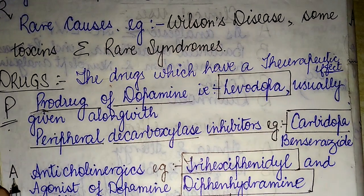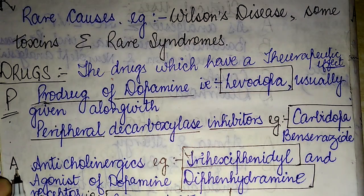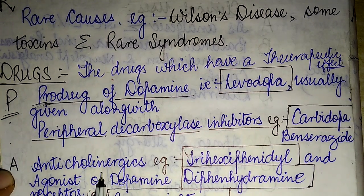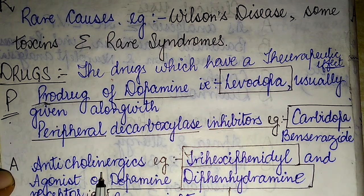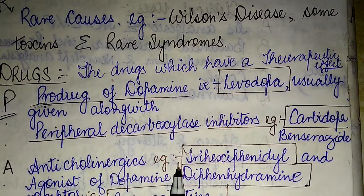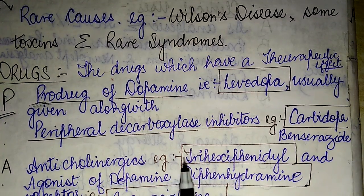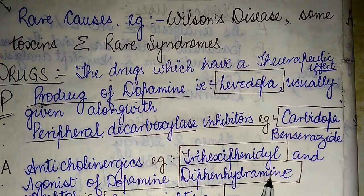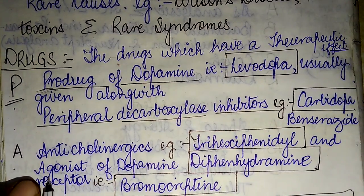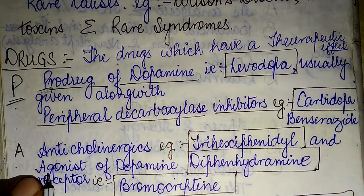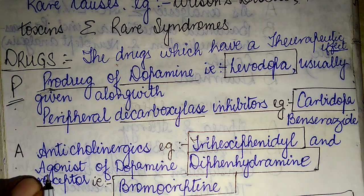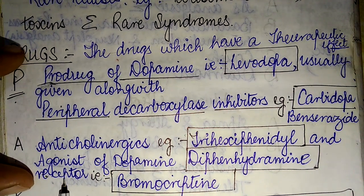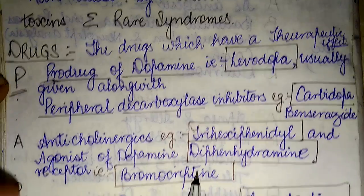Next, A — this category comprises anticholinergic drugs. Famous examples include trihexyphenidyl and diphenhydramine. Another category used in the treatment of Parkinson's disease are the agonists of dopamine receptors, that is bromocriptine.